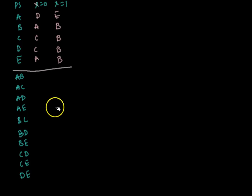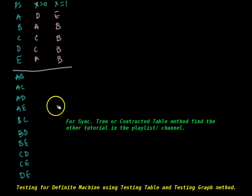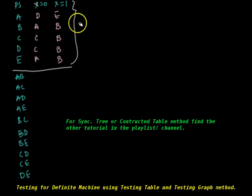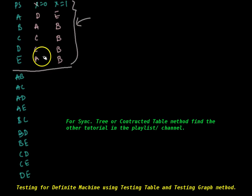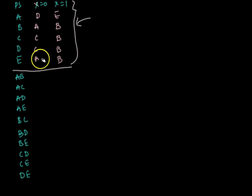In order to check whether a given finite state machine is a definite machine or not, using a testing table and testing graph, we need to first develop the testing table. The upper part of the testing table is the finite state machine itself. Using this upper part, we develop the lower part of the testing table. From that lower part, we develop the testing graph. If there is any loop in the testing graph, the machine is not a definite machine. If there is no loop, the machine is a definite machine.